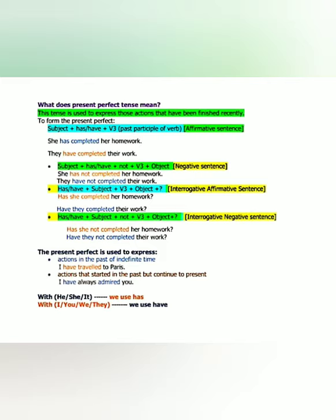For negative sentences: Subject + has/have + not + V3 (past participle) + object. So 'She has not completed her homework' and 'They have not completed their work.' For asking a question, we move has/have in front of the subject: Has/have + subject + V3 + object + question mark. So 'Has she completed her homework?' and 'Have they completed their work?' This formula is for interrogative affirmative sentences.